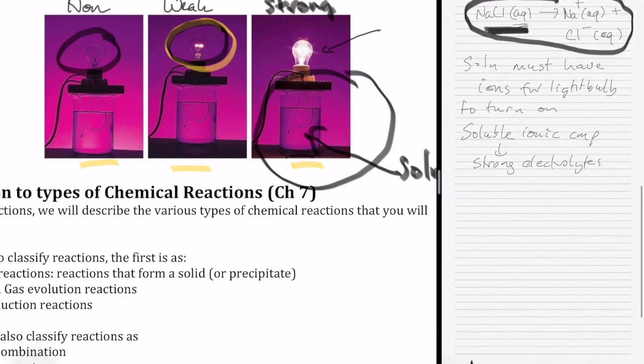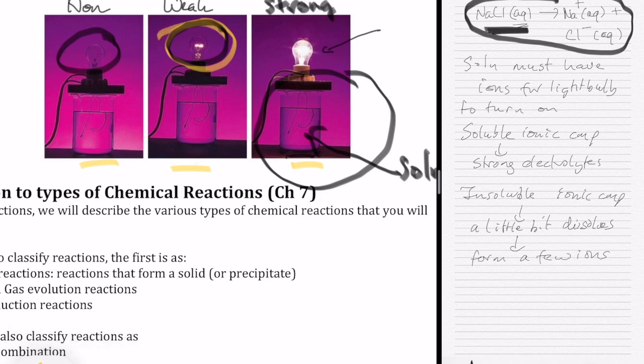And then we have our insoluble ionic compounds. So you might think that if it's insoluble, then it's not going to form any ions at all. Well, it turns out that insoluble means that a little bit of it dissolves. You still form a few ions. Your light bulb is going to be just a little bit of light in the category of the weak electrolytes.